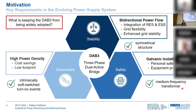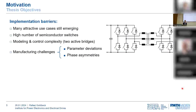So we might ask what is keeping the DAB3 from being more widely adopted. There are a few significant implementation barriers. Many attractive use cases may still be pending since they are related to emerging technologies. This topology also features a high number of semiconductor switches, so if we are easier on the requirements we might have less costly alternatives.